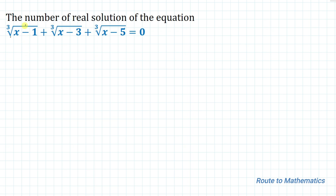The given question is: find the number of real solutions of the equation — cube root of (x minus 1) plus cube root of (x minus 3) plus cube root of (x minus 5) equals zero. We are asked to find the real solutions of x from the given equation.